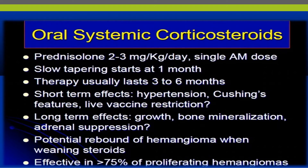When treatment is necessary, the first-line treatment is oral systemic corticosteroids — prednisolone 2 to 3 mg per kg per day once daily — with slow tapering starting at around one month. Therapy lasts three to six months. Short-term and long-term effects should be monitored, and there is a potential for rebound growth when steroids are tapered. This is effective in more than 75 percent of proliferative hemangiomas.